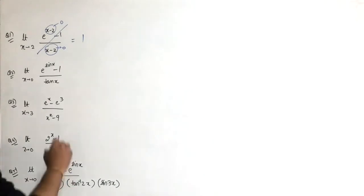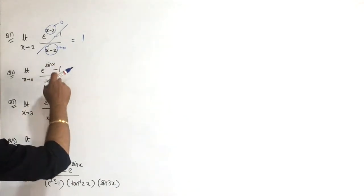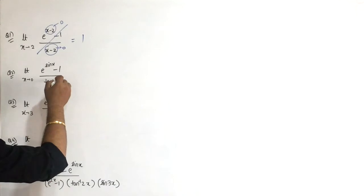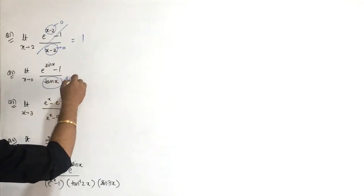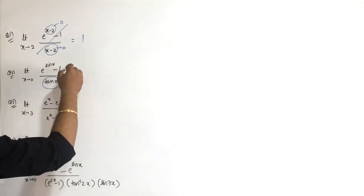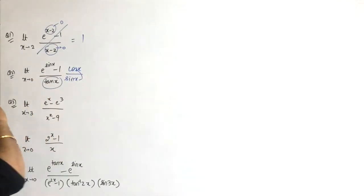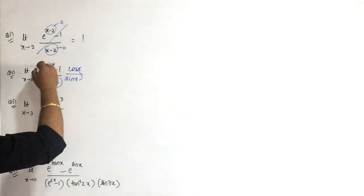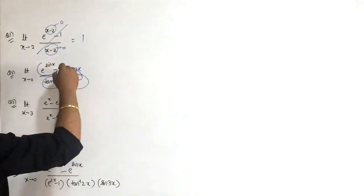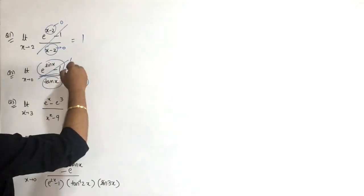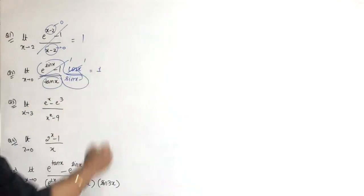Next expression: e to the power sine x, as x goes to 0, minus 1 upon sine x. But it's written as tan x, which I can write as sine x upon cos x. So cos x goes to the top. Now e to the power sine x minus 1 upon sine x - this whole thing goes to 1, cos also goes to 1, so the expression equals 1.